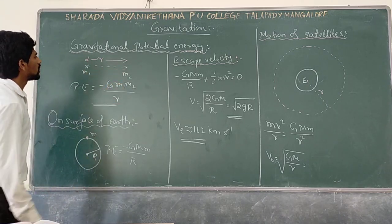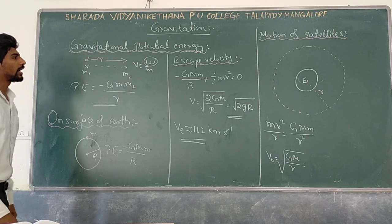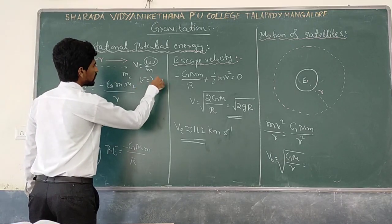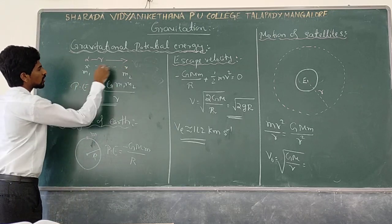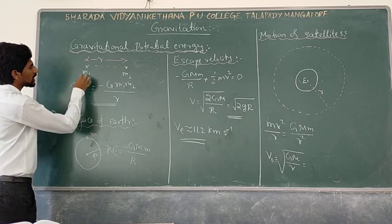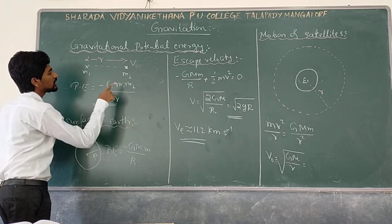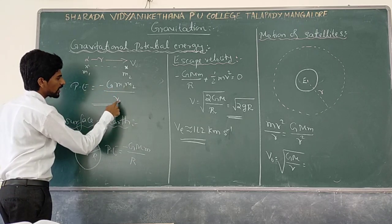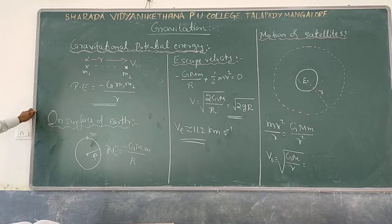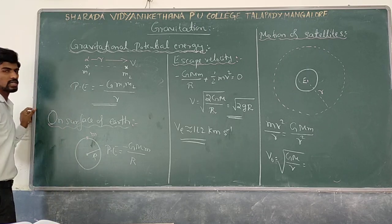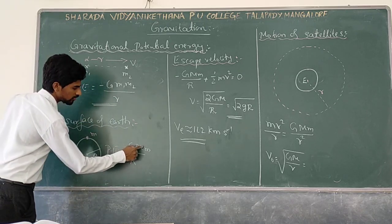Next is gravitational potential energy. Gravitational potential V equals W by M, so the energy equals V into M. For two masses M1 and M2, because of M1, there is a potential at distance R. Multiplying by M2 gives gravitational potential energy, which is equal to minus GM1 M2 by R. The gravitational potential on the surface of Earth is minus GM1 by R, and the potential energy is minus GM1 by R into mass.